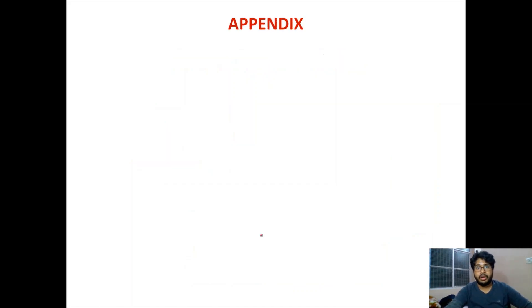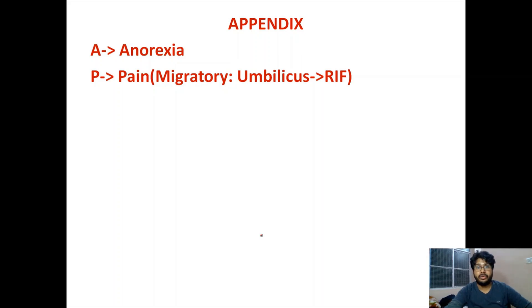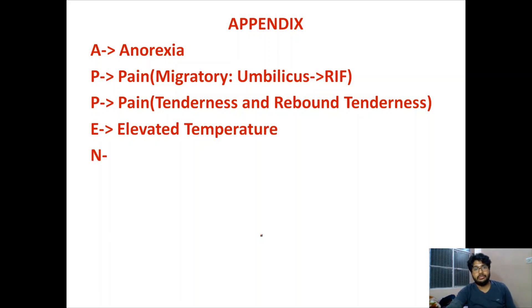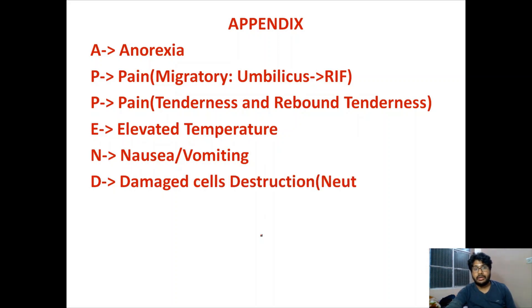You should remember 'APPENDIX' as a mnemonic to remember the symptoms. A for anorexia. P for pain — pain is migratory, starting at the umbilicus and shifting to the right iliac fossa, though not present in every patient. The second P is for pain again, because there is tenderness and rebound tenderness. E for elevated temperature. N for nausea or vomiting. D for damage or cell destruction — neutrophils increase, which is also called a left shift.